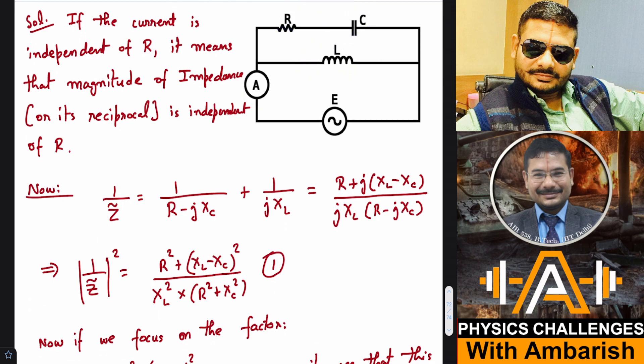So what I can do is write the reciprocal impedance and then try to make the reciprocal impedance independent of resistance. If the total impedance is independent of resistance, that means the reciprocal impedance is also independent of the resistance. So one upon Z tilde - I'm writing this tilde symbol to represent a complex number or phasor.